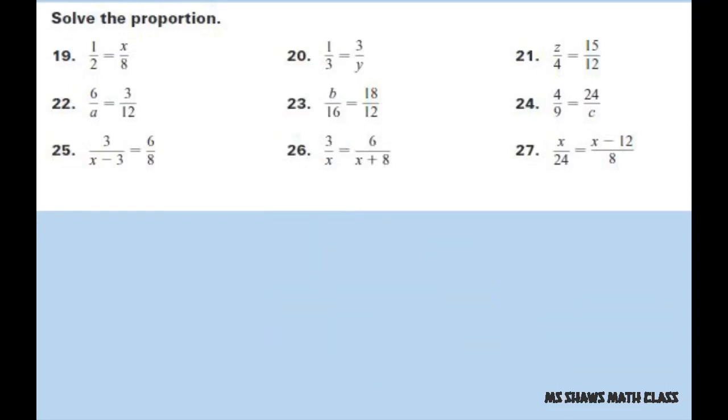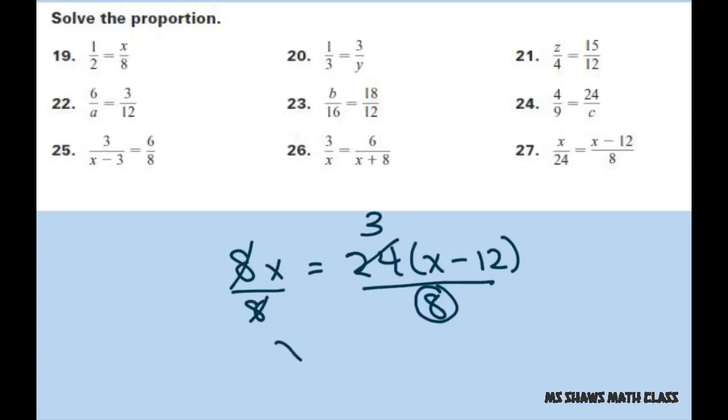And the last one: 8x equals 24 times (x minus 12). Since I don't want to use a calculator, I'm going to go ahead and divide both sides by 8. 8 goes into 24 three times. So now I can simplify this by saying x equals 3x minus 36.